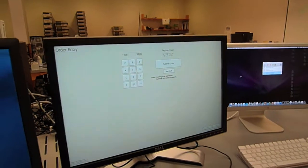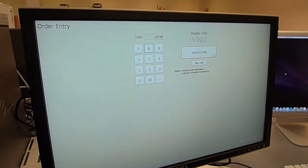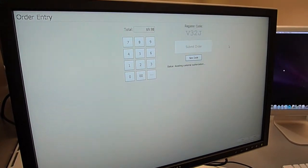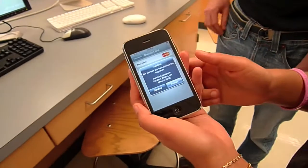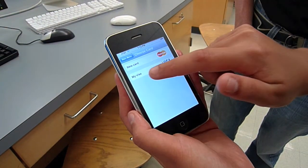So we can go ahead and enter a price or something. $9.98. Hit submit order. And then over here on the phone, it asks us to confirm. So we're going to accept the payment and choose our credit card.